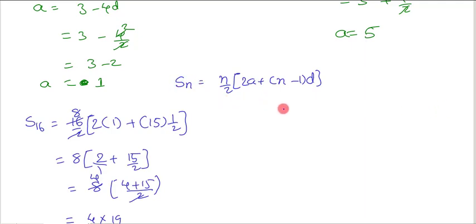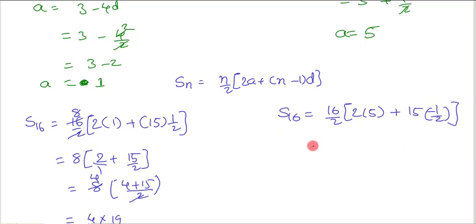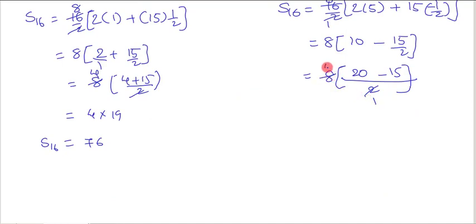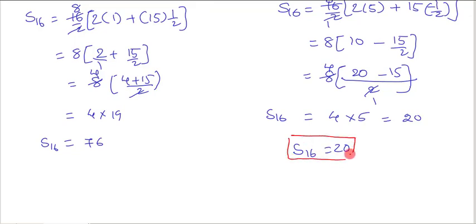For Case 2, where a = 5 and d = −1/2: S16 = 16/2 × [2(5) + 15(−1/2)] = 8 × [10 − 15/2] = 8 × [20/2 − 15/2] = 8 × 5/2 = 4 × 5 = 20. So there are two values of the sum of the first 16 terms: 76 or 20.